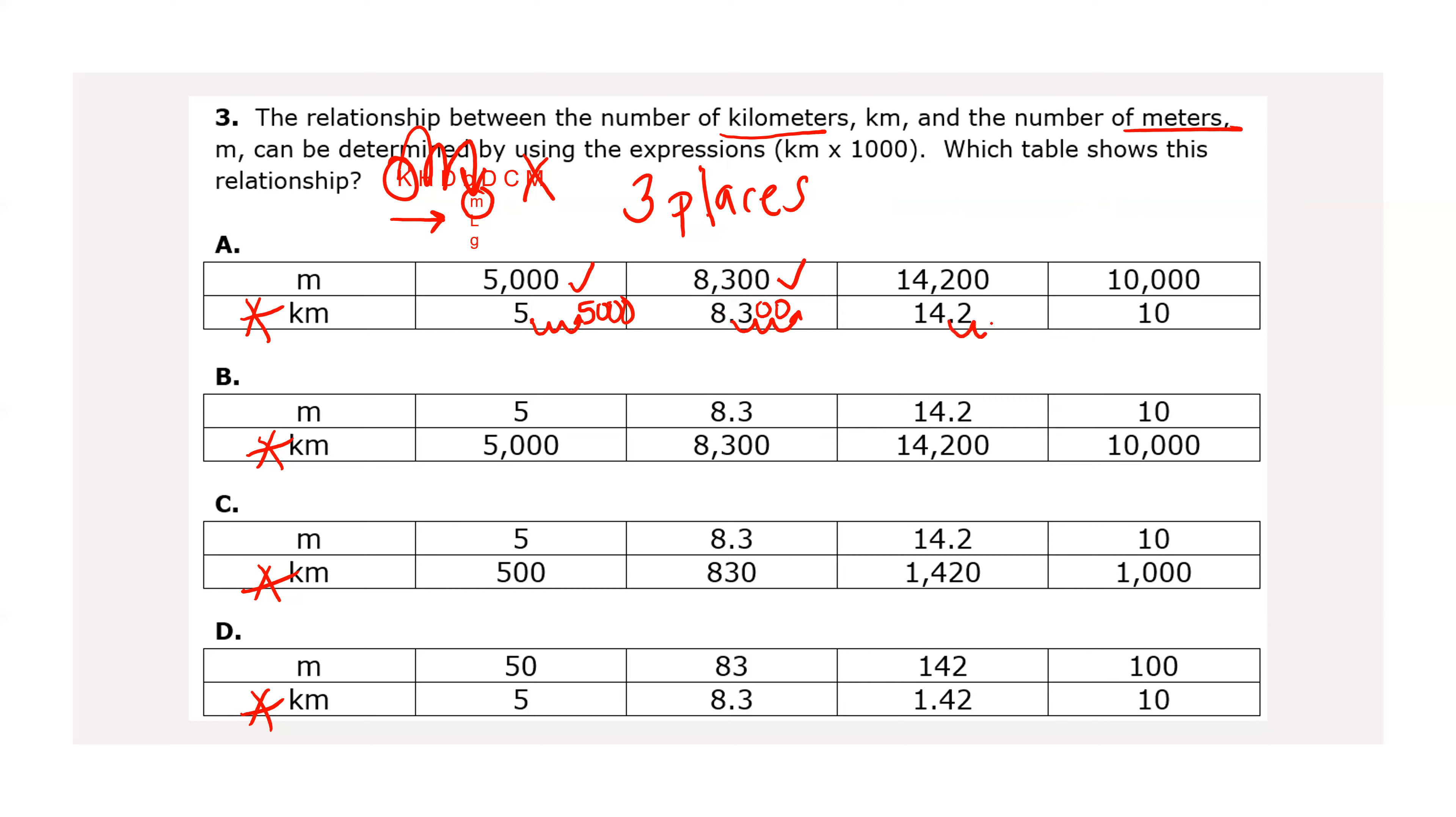14.2. Once, twice, three times. Put in your zeros. 14,200. 14,200. And then the whole number 10. The decimal point is at the end. Now I'm going to move it. Once, twice, three times. One, two, three. And we have our answer. I believe. I think it's A. Kilometers.